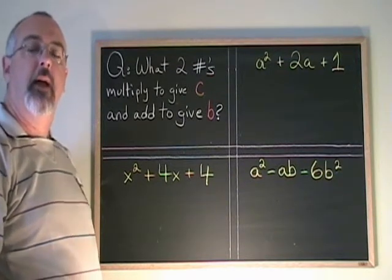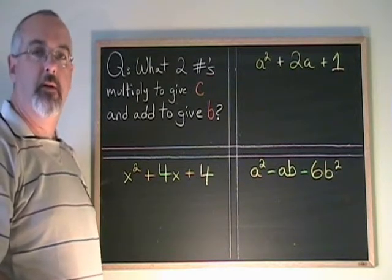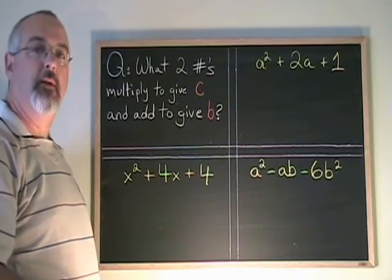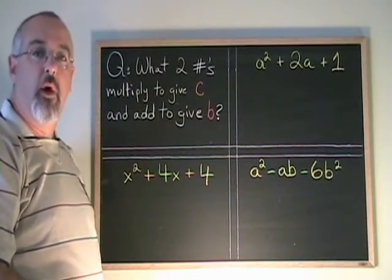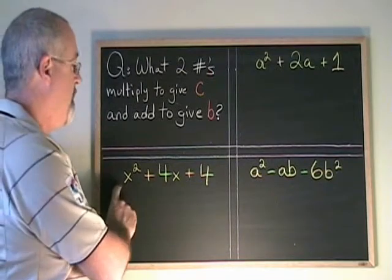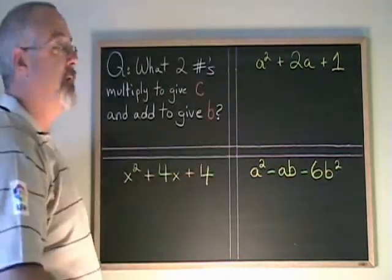This video illustrates how to factor a simple trinomial. A simple trinomial is one whose first term has a numerical coefficient of 1. In each of these cases, the numerical coefficient of the first term is 1.